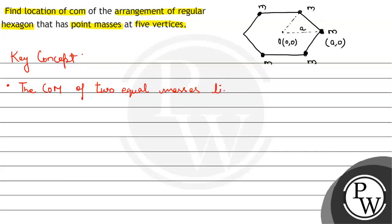Lies at their center point. The second key concept is the coordinates of center of mass. We can find it by the relation: x̄ = (m₁x₁ + m₂x₂)/(m₁ + m₂).